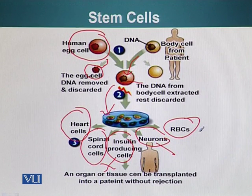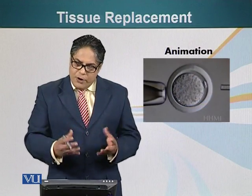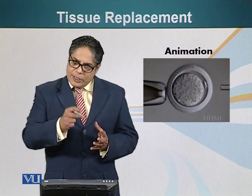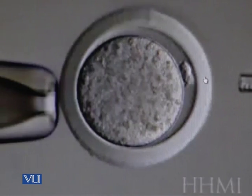Now I would like to show you a technique of how the nuclear transfer works. Let's look at an animation showing how we generate enucleated fertilized egg cells and then how a nucleus is injected into the cell. Here is a holding pipette holding a fertilized egg cell, and this is again the zona pellucida. First of all, we are going to drill a hole in it — this time with a pipette rather than a laser.